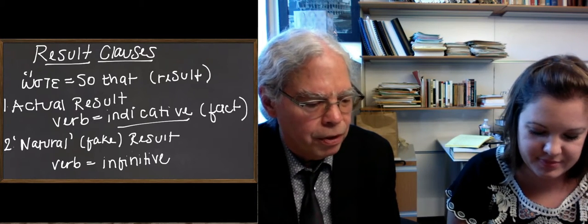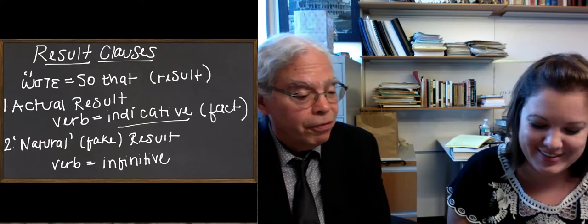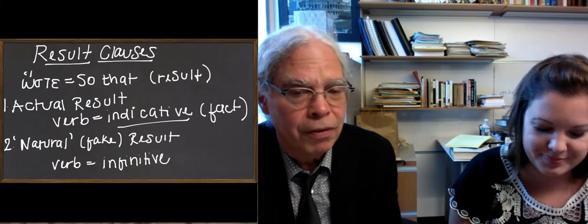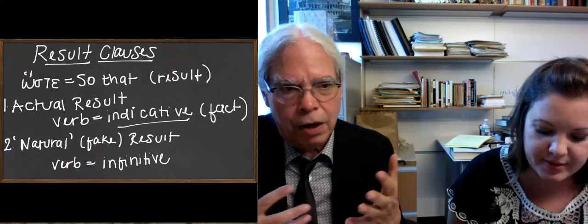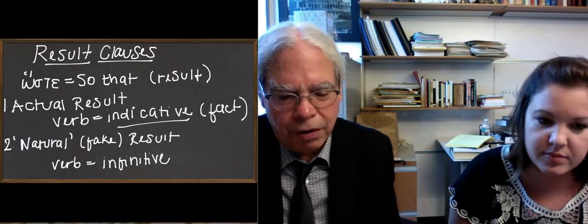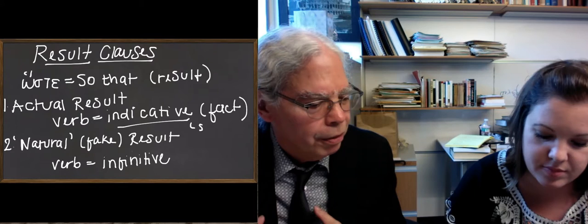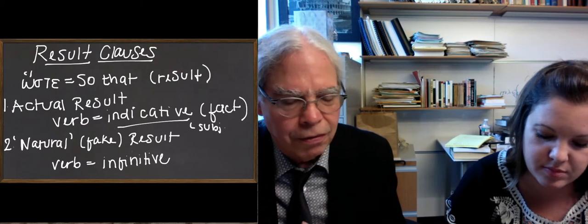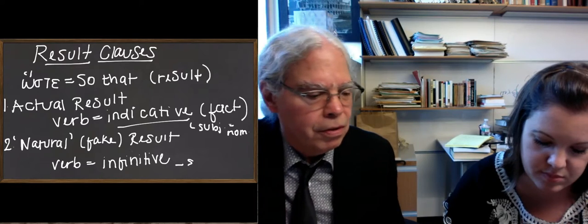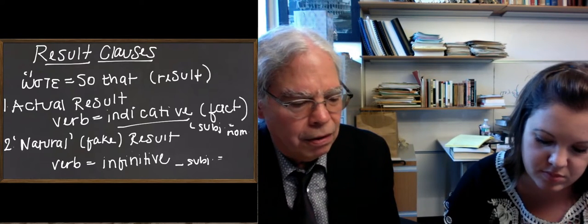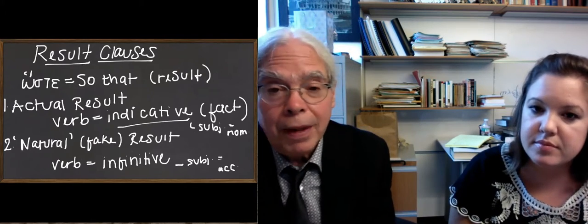And you're going to put his parents in what case? Because the verb is an infinitive, right? And the subject of an infinitive has to be the accusative case. So we really have two contrasts. The actual result has a subject in the nominative case, if it's actually expressed, and a finite verb. That's an indicative. And the natural result has a subject in the accusative case, if there is one, and an infinitive, not an indicative. So that's the way it works.